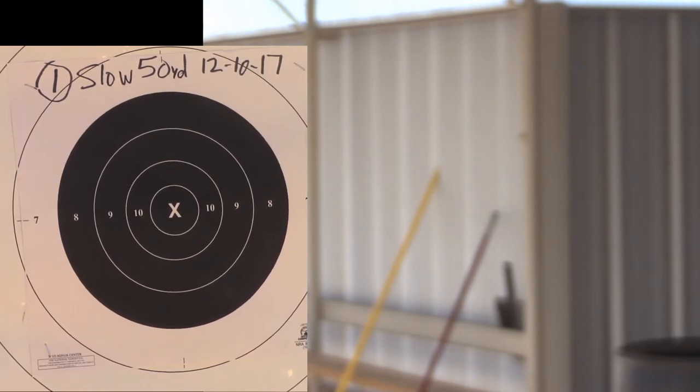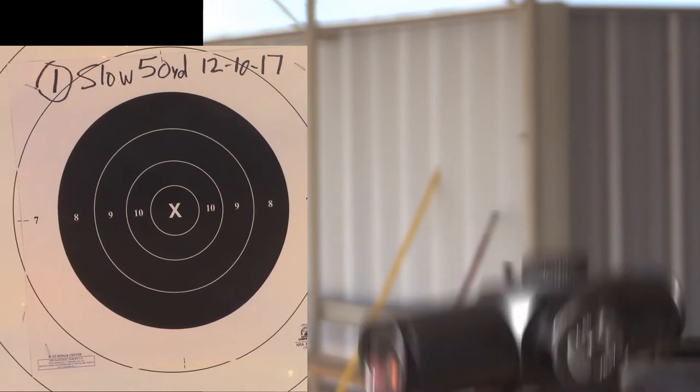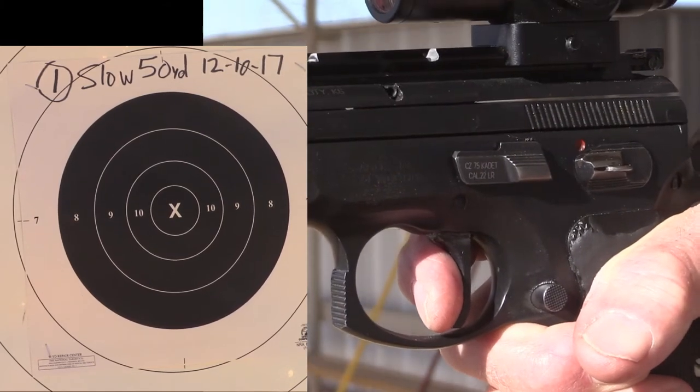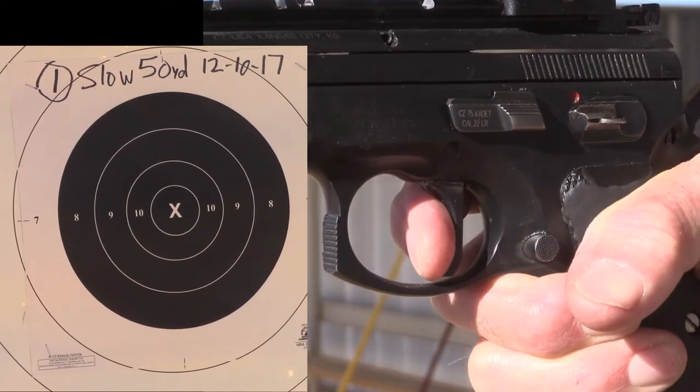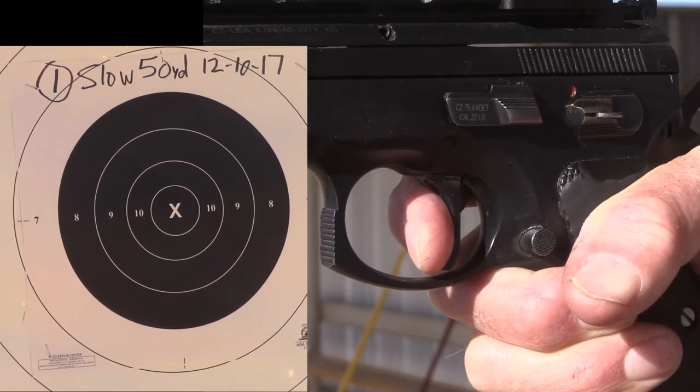Okay, here we go. Slow fire, 50 yards, standing, single hand, and I'm going to try to take a close up of the pistol and the trigger finger. I can't see where it's hitting, but I've got the camera running at the other end. I'm going to let the gun settle, I'm putting some pressure on the trigger, and as the dot comes into the block I'm going to fire.